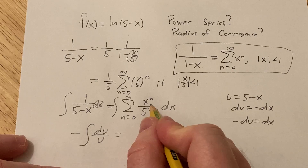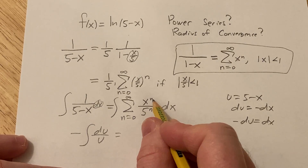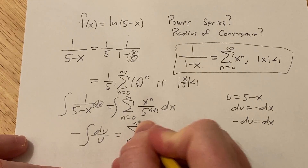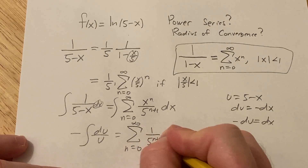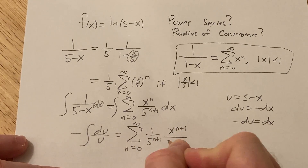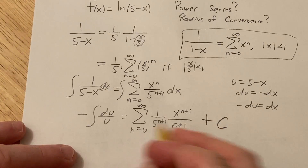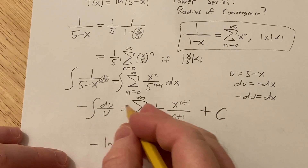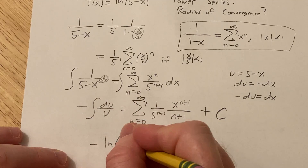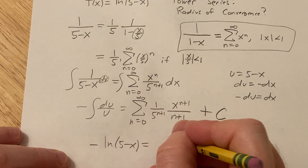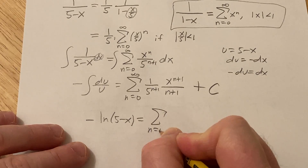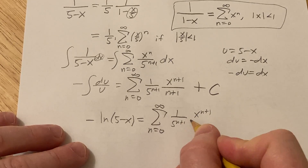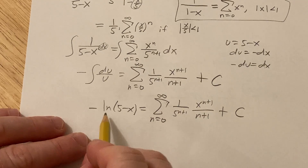On the right side, when you integrate the series term by term, you add 1 to the exponent and divide, giving the infinite sum as n runs from 0 to infinity of (1 over 5 to the n+1) times (x to the n+1 over n+1), plus a constant C. On the left side this gives negative ln(5 minus x).